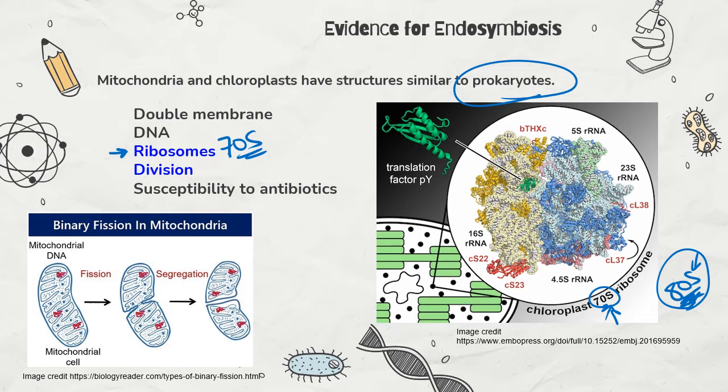Super cool. Also, mitochondria and chloroplasts divide via binary fission, which is the same method of cell division used by bacteria cells. Mitochondria and chloroplasts reproduce independently of the rest of the cell, and they reproduce via binary fission — the same way bacteria cells reproduce.